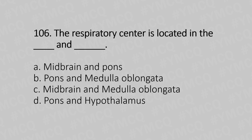Question number 106: The respiratory center is located in the dash and the dash. Option A: midbrain and pons, Option B: pons and medulla oblongata, Option C: midbrain and medulla oblongata, Option D: pons and hypothalamus. The answer is Option B, pons and medulla oblongata.